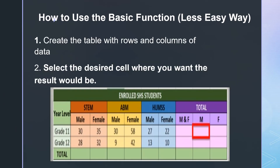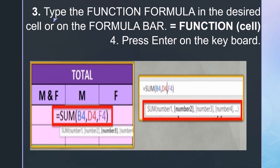To use a basic function the less easy way: First, create the table with rows and columns of data. Second, select the desired cell where you want the result. Third, type the function formula in the desired cell or in the formula bar. Last, press Enter on the keyboard.